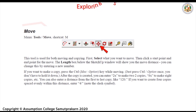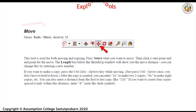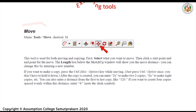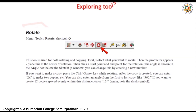Next is the Move tool (shortcut key: M). This tool is used for both moving and copying. First, select what you want to move, then click a start point and end point for the move. The length box below the SketchUp window will show the move distance, and you can change this by entering a new number. If you want to make a copy, press the Ctrl key or Option key while moving — just press it once, you don't have to hold it down. After the copy is created, you can enter '2x' to make 2 copies, '8x' to make 8 copies, etc. You can also enter a distance and use the slash notation to space copies evenly — for example, enter '4/' to create 4 copies spaced evenly within that distance.